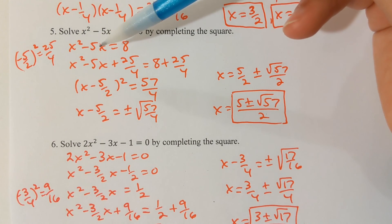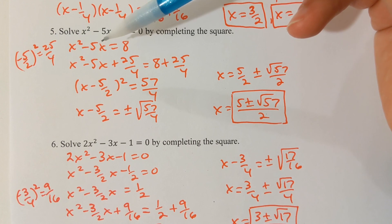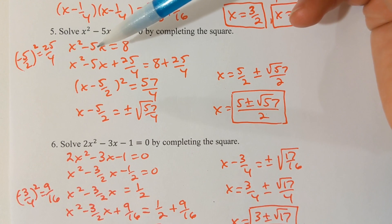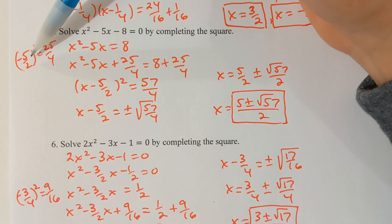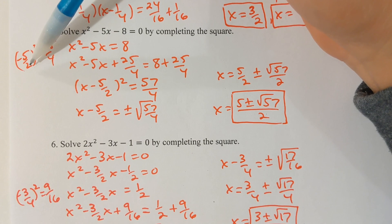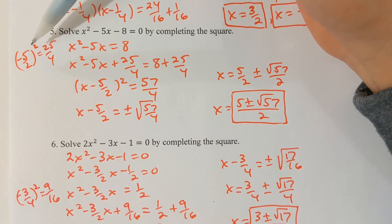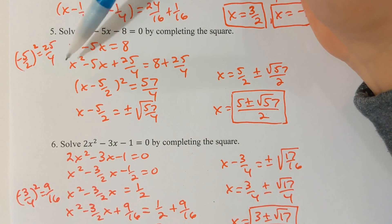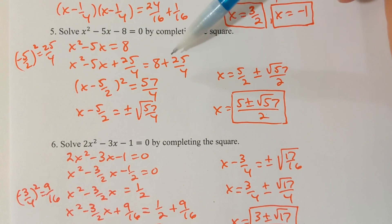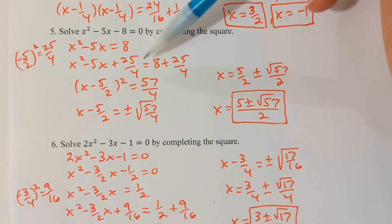I need to take half of the number in front of x and add that new number to both sides. For this problem, there's a negative 5 in front of x. I want half of that number squared: negative 5/2 squared — negative 5 squared is 25, 2 squared is 4 — so 25/4 would be the number that I add to both sides.